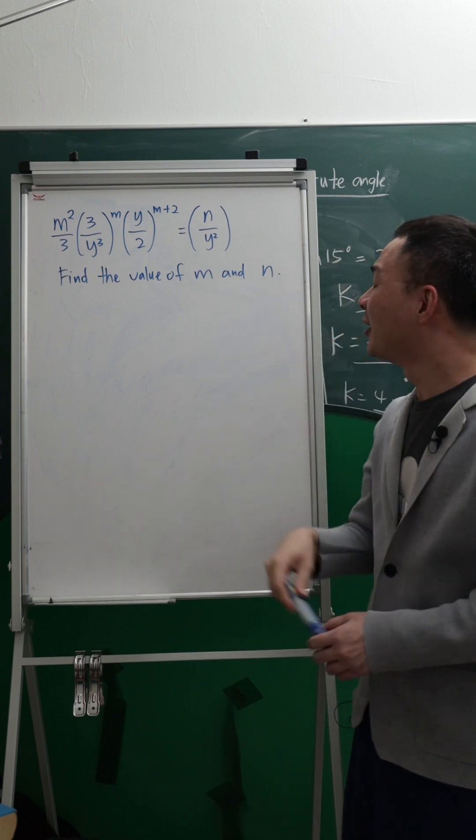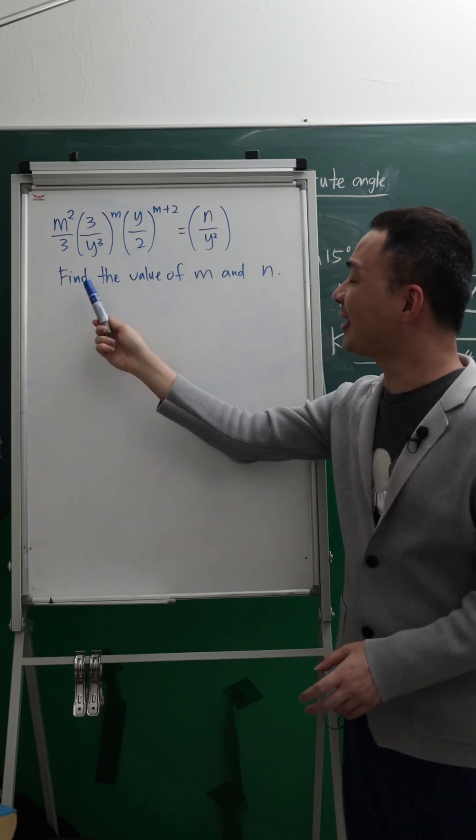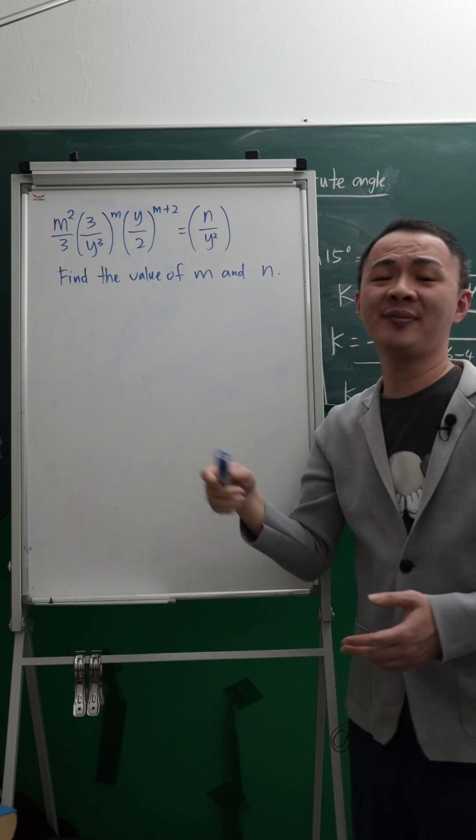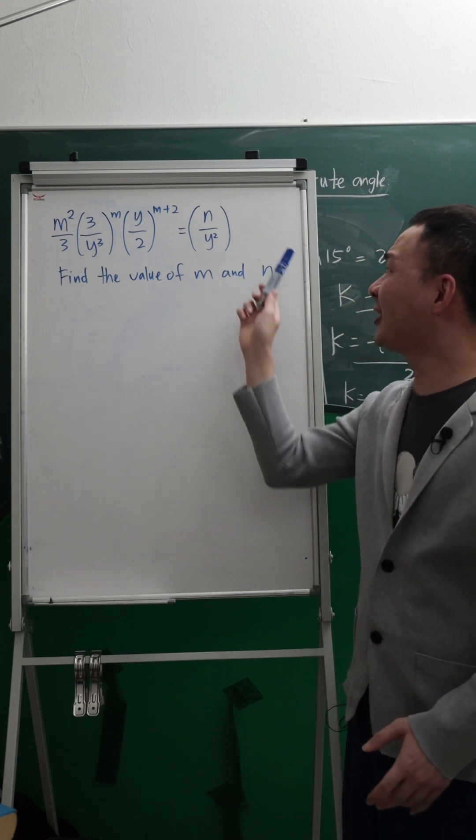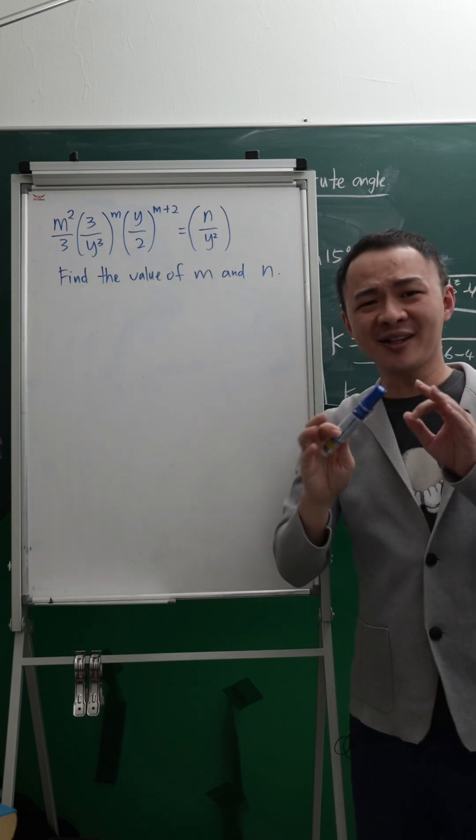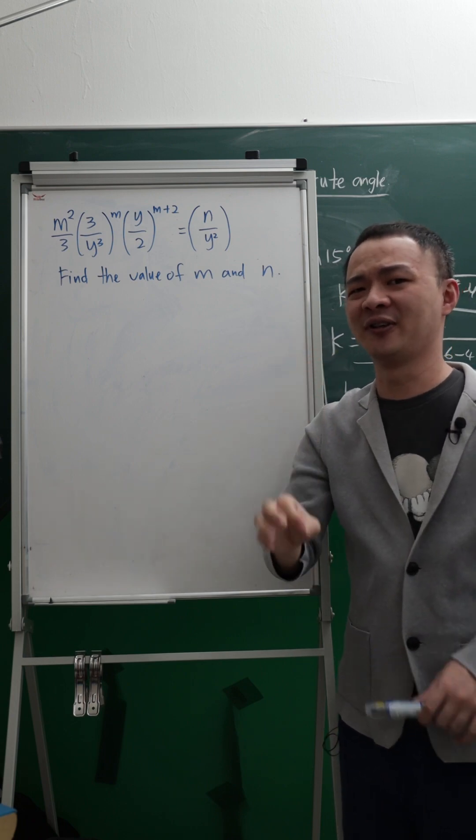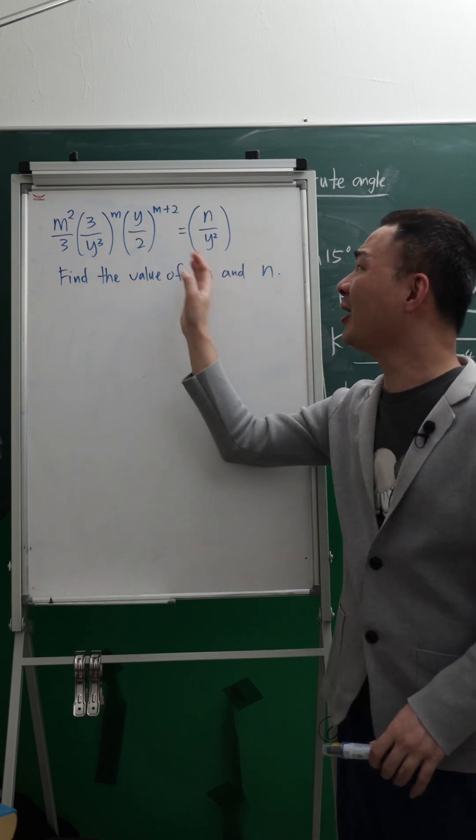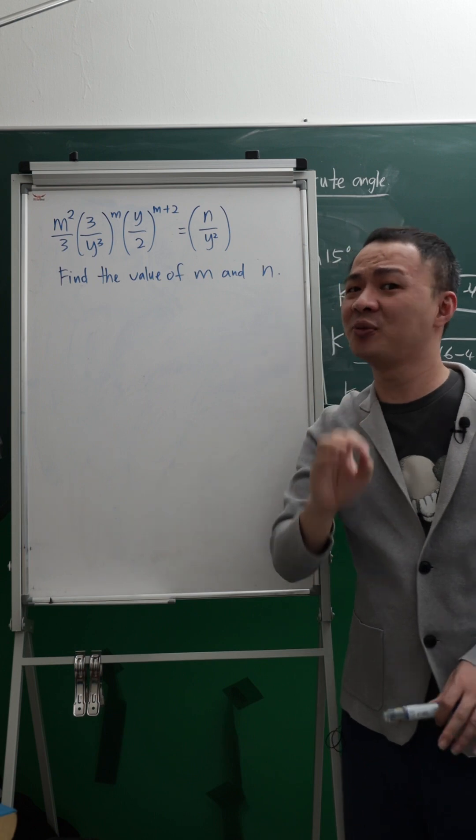This is how you should do it. For this kind of question, they ask us to find the value of M and N. So over here, it doesn't matter about Y. So I just assume Y is sort of the variable like X and Y, and M and N I would just assume they are constant.